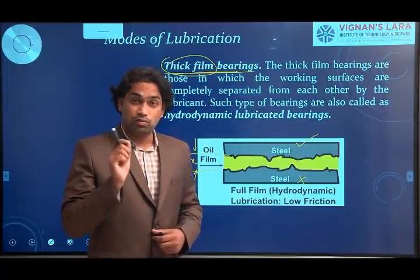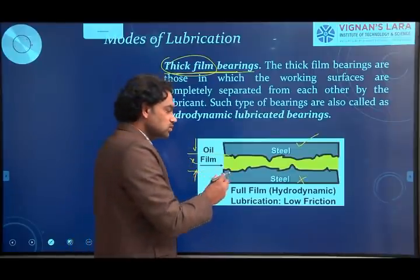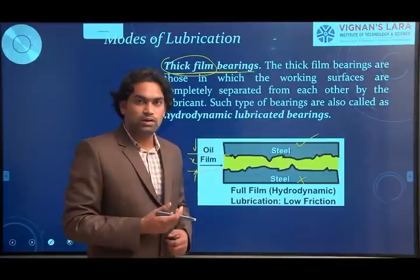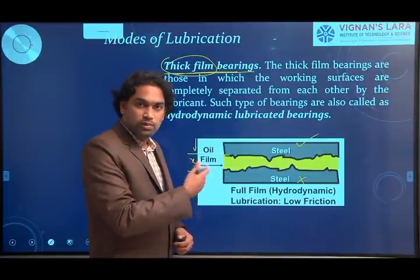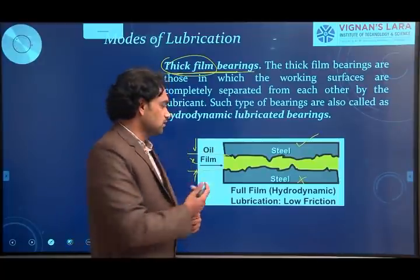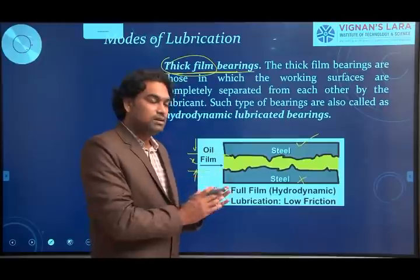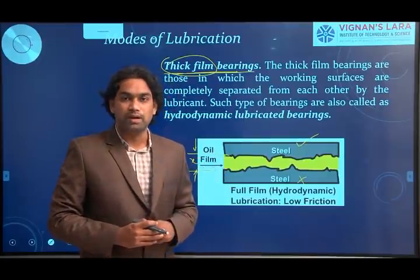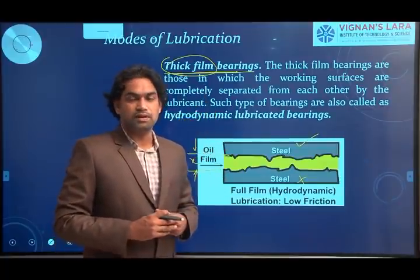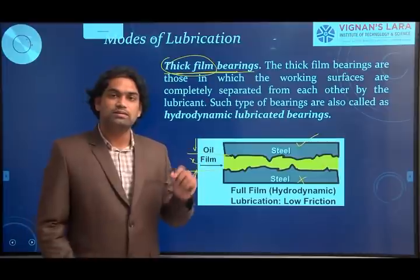In thick film bearings there is no metal friction, but we don't say there is no friction at all — it is the absence of metal friction, but there is always a presence of viscous friction. Due to the viscosity of the lubricant, friction is generated, which we call viscous friction. There is no metal friction present in these bearings, but viscous friction is present. To form this thick film between the two surfaces, there are two methods.